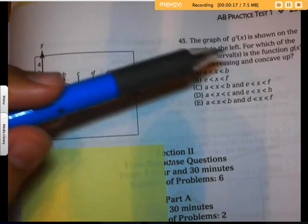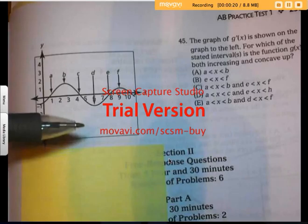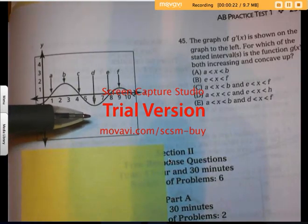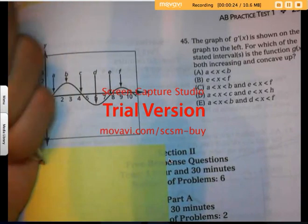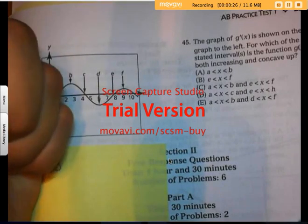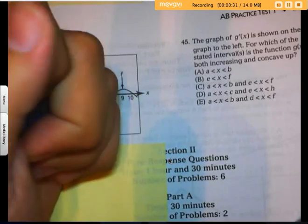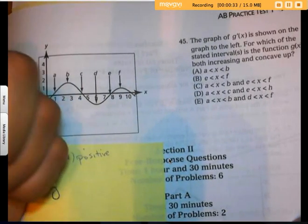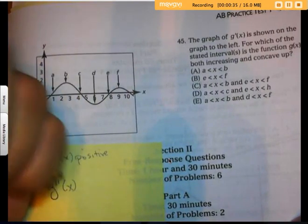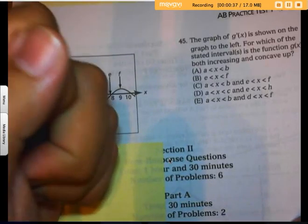G prime is shown in the graph on the left. For which interval is the function both increasing, which means G prime is positive, and concave up, which means the slope of G prime is positive?